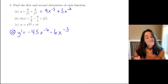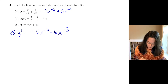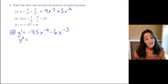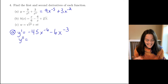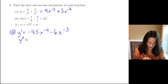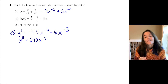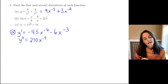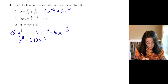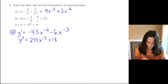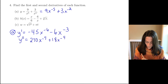This is the first derivative. Now the second derivative — we just differentiate again. We have minus 45 times minus 6, which is positive 270, times x to the minus 7. Then we have minus 6 times minus 3, which is positive 18, times x to the minus 4.